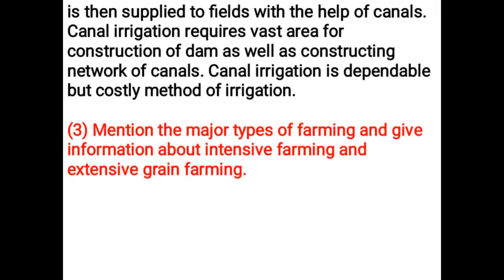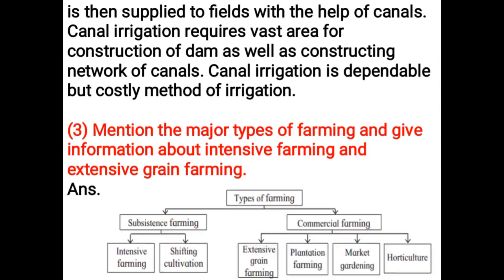Mention the major types of farming and give information about intensive farming and extensive grain farming. Types of farming: Subsistence farming (divided into intensive farming and shifting cultivation) and commercial farming (divided into extensive grain farming, plantation farming, market gardening, and horticulture).